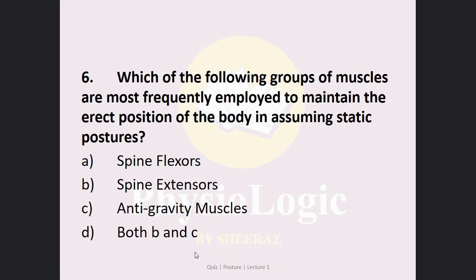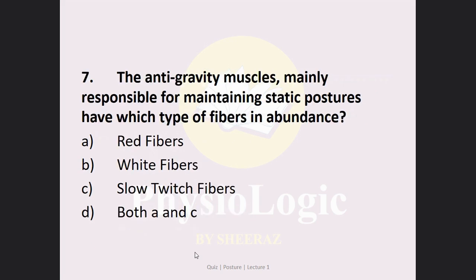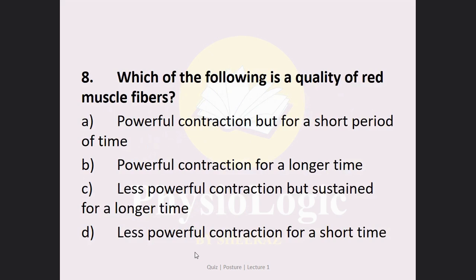MCQ number 6: Which group of muscles is most frequently employed to maintain the erect position of the body in assuming static postures? Option A: spinal flexors, Option B: spinal extensors, Option C: anti-gravity muscles, Option D: both B and C. The correct answer is Option D — both B and C — because spinal extensors are also known as anti-gravity muscles.